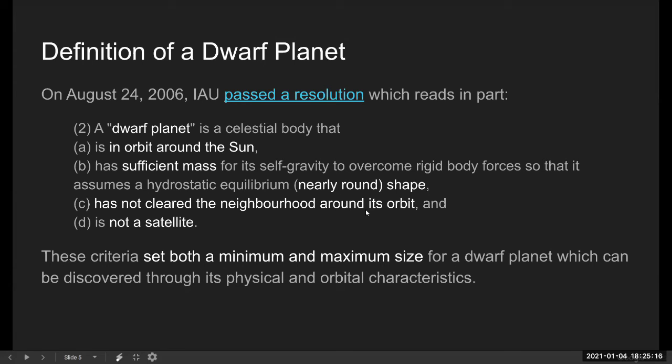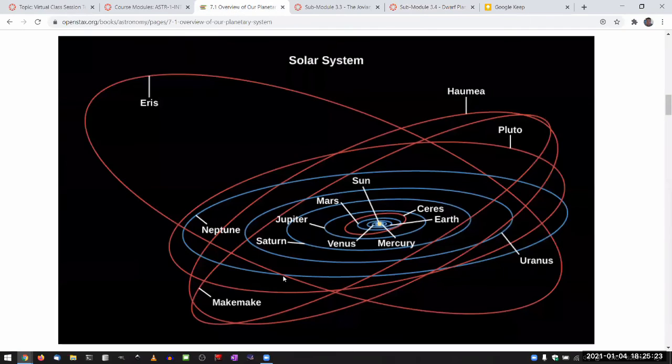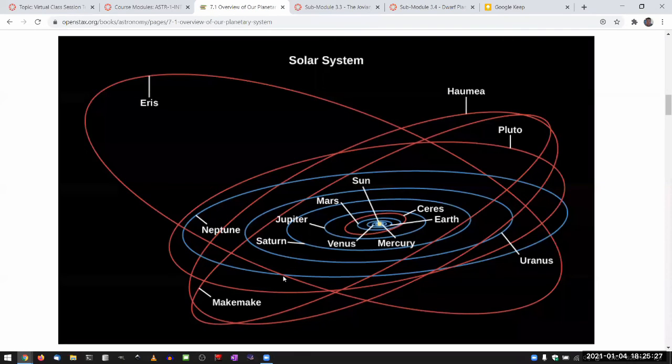And the objects that are illustrated in this figure are the definite objects that belong in the dwarf planet category, but there may be more. Within the asteroid belt, Ceres is probably the only one.